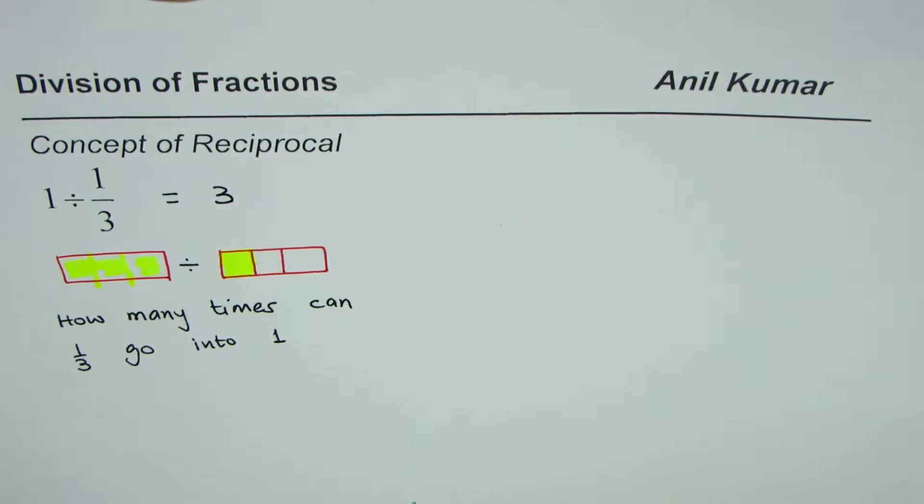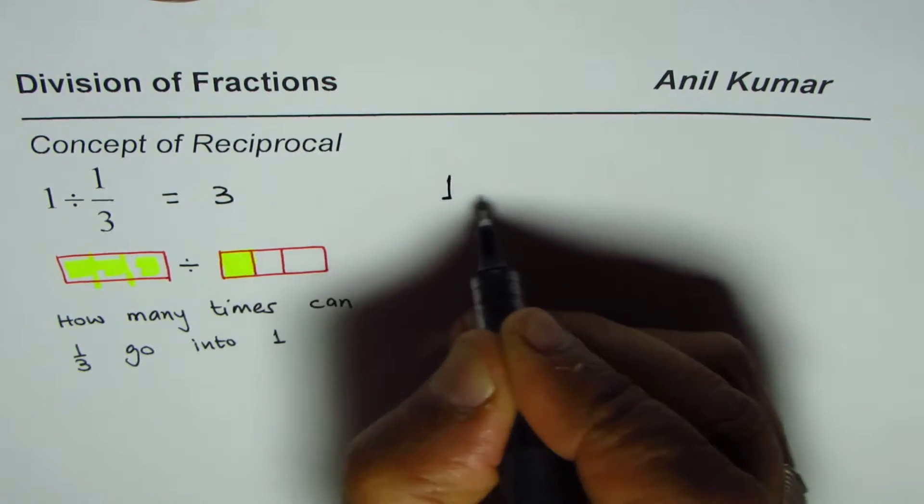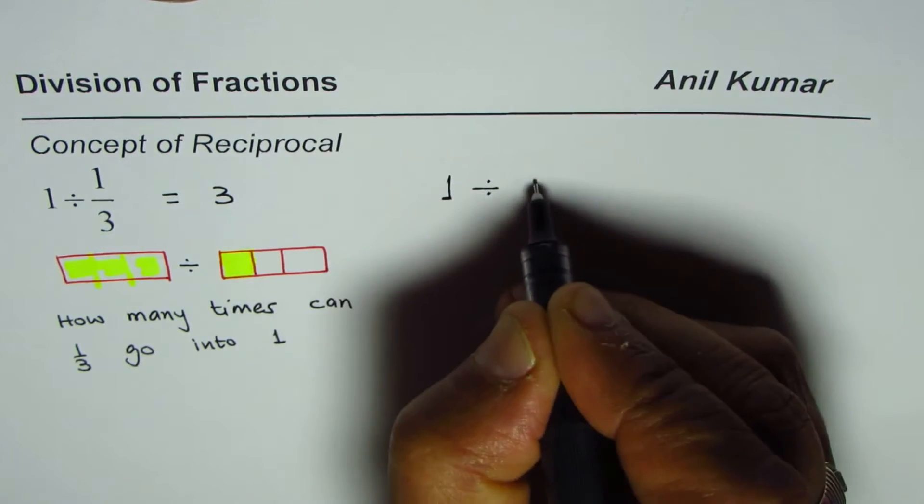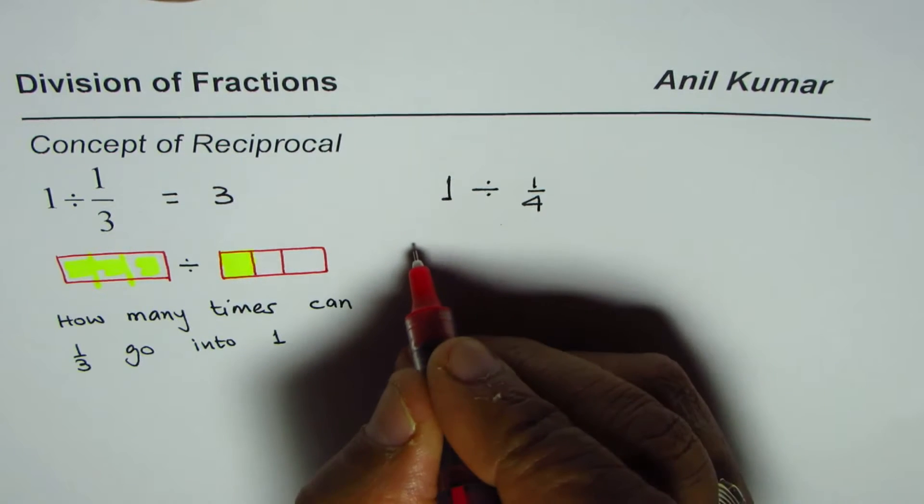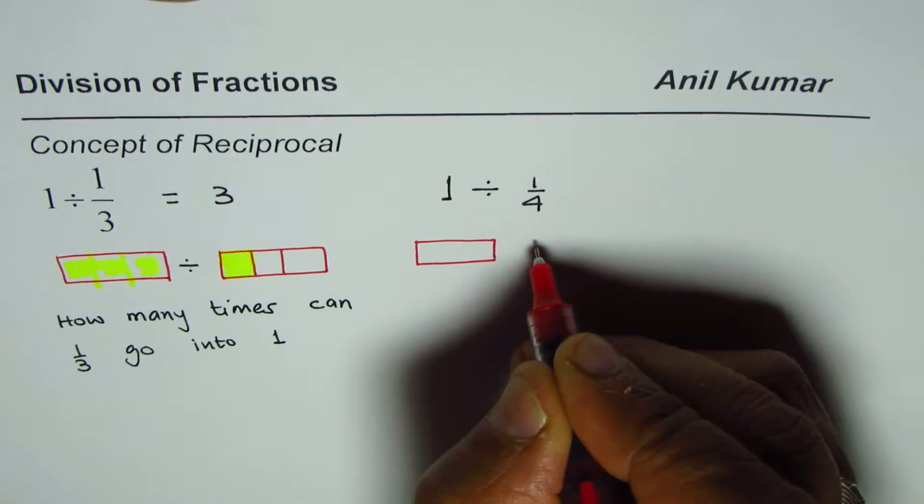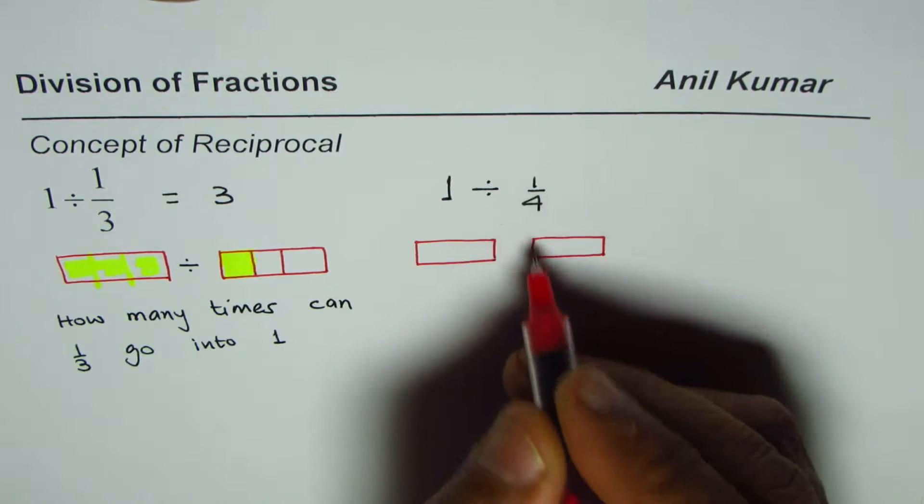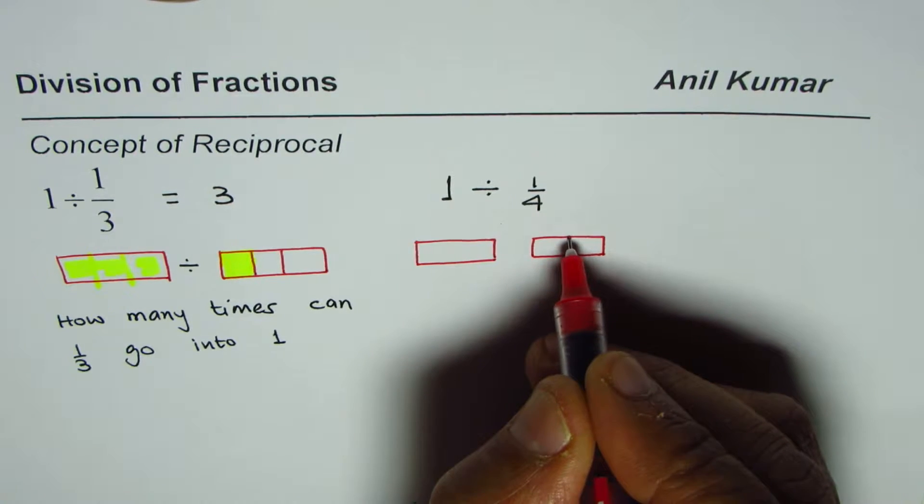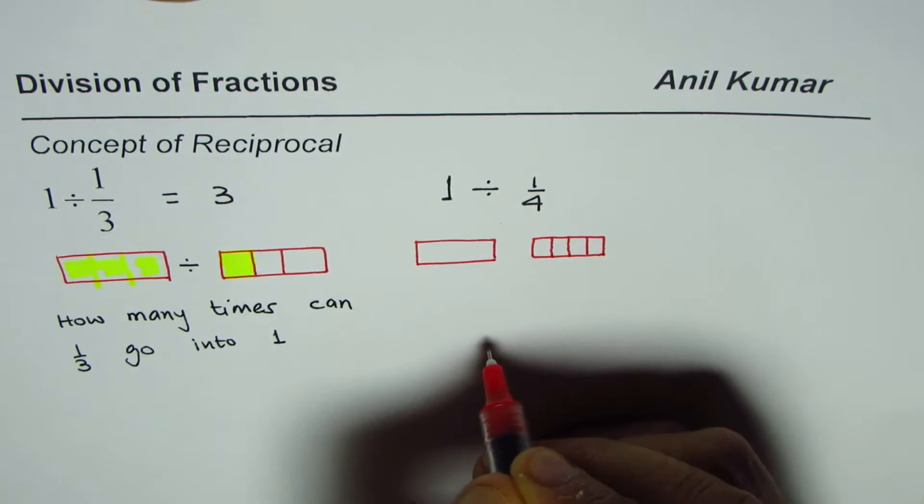Got it? Now let's take another example. Let us say now we have one divided by one fourth. So in that case let's do this again with the same concept. If I make one whole and another one same size rectangle, divide the second one into four parts. So that is my one fourth.